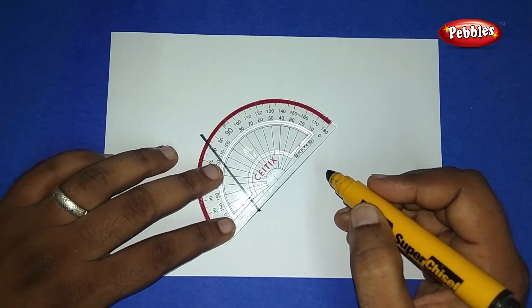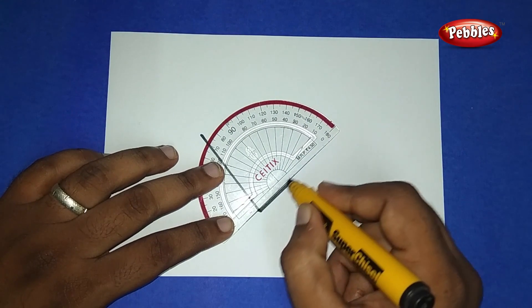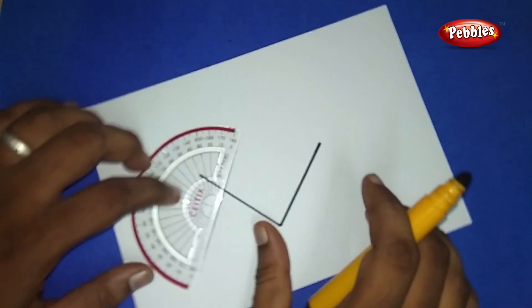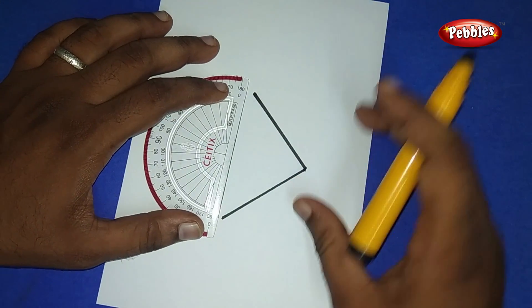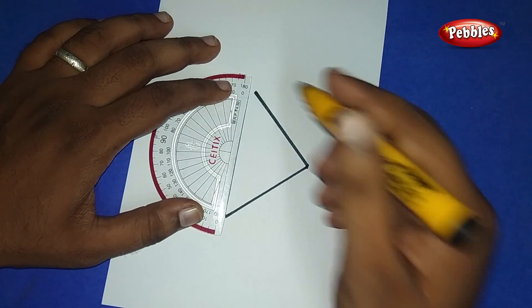Again, draw a slanting line on the other side. Now join both the lines using a straight line at the top.